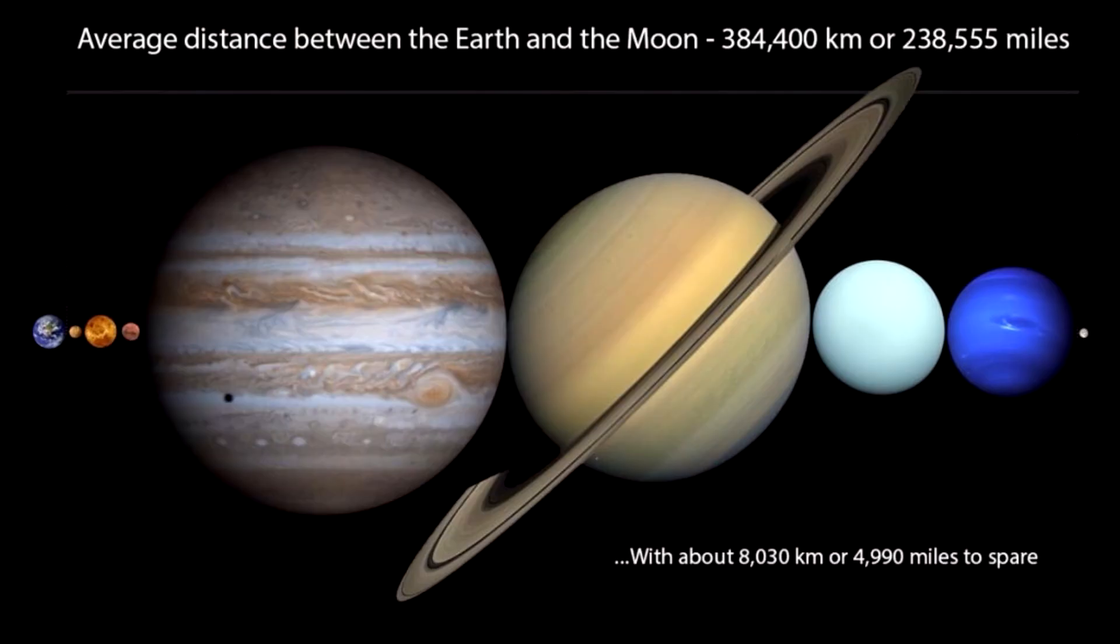Distance between earth and moon. There's really astonishing thing you didn't know about distance between earth and moon, which equals to 384,400 km or 238,500 miles. In the picture in the video you can see that you can fit all of solar system's planets in this distance.